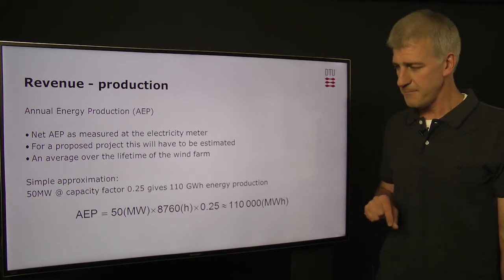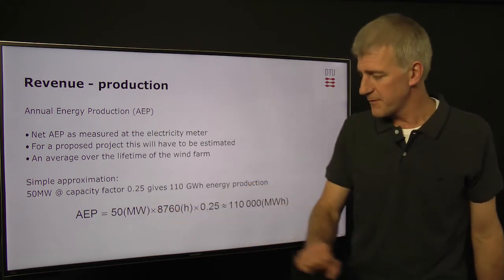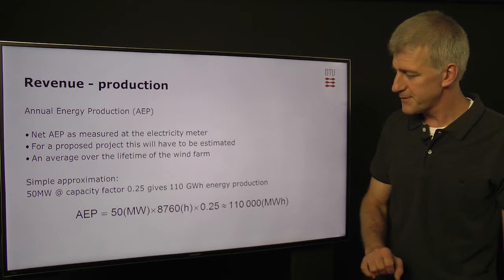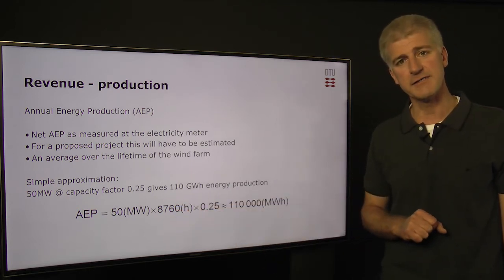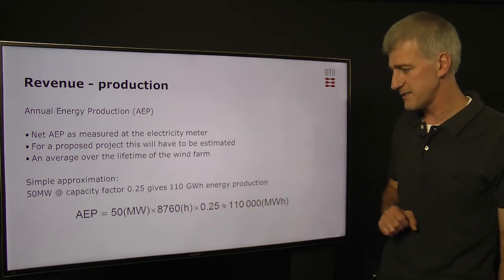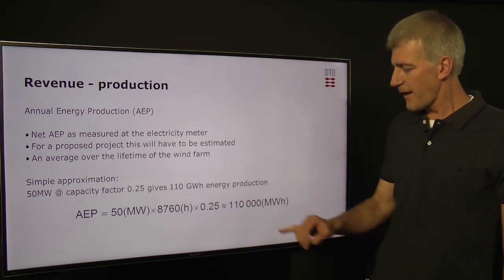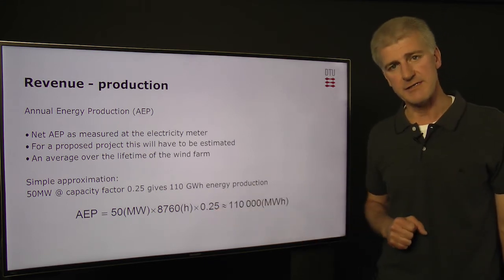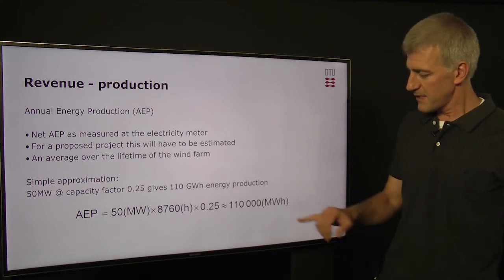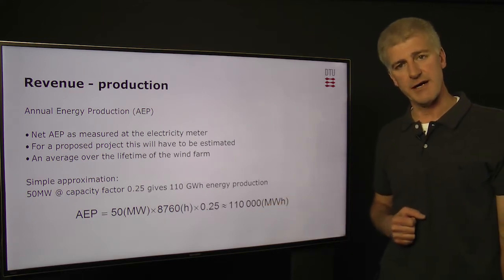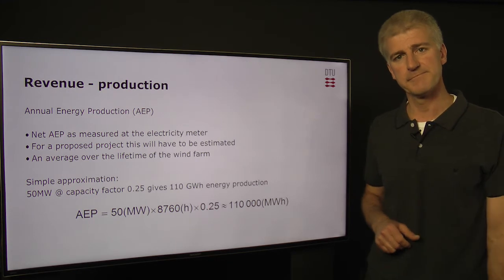How did we get there? Well, we use the capacity of the wind farm — 50 megawatts — multiplied by the number of hours in a year, which is 8,760, and multiplied again by the capacity factor of 25%. This gives 110,000 megawatt hours, or 110 gigawatt hours.